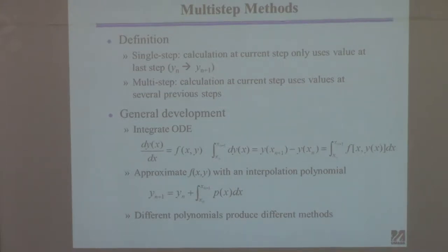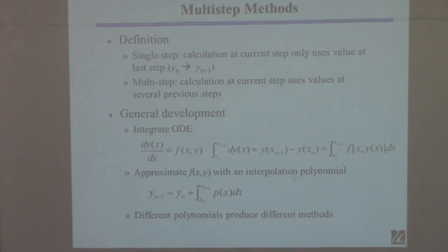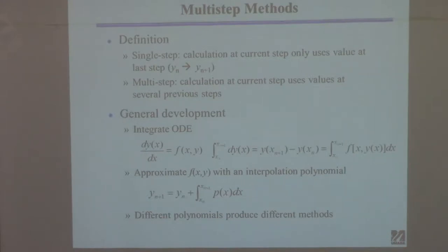Perhaps the easiest thing in the world to integrate is a polynomial. If this function f were a polynomial, you could integrate it — everyone knows how to integrate or differentiate a polynomial. So if you substitute a polynomial approximation p(x) for f, you can integrate that and get an answer. The question is how you come up with that polynomial p that approximates the function. Depending on how you construct this polynomial, you get a different method.